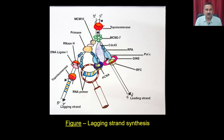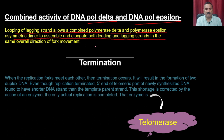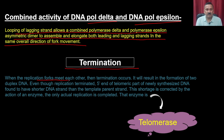Looping of the lagging strand allows a combined DNA polymerase delta and polymerase epsilon asymmetric dimer to assemble and elongate both leading and lagging strands in the same overall direction of fork movement. Then the last step is termination. When replication forks meet each other, termination occurs, resulting in the formation of two duplex DNA molecules. Even though replication is terminated, the 5-prime end of the telomeric part of the newly synthesized DNA molecule is found to be shorter than the template strand — a shortage corrected by the enzyme telomerase.